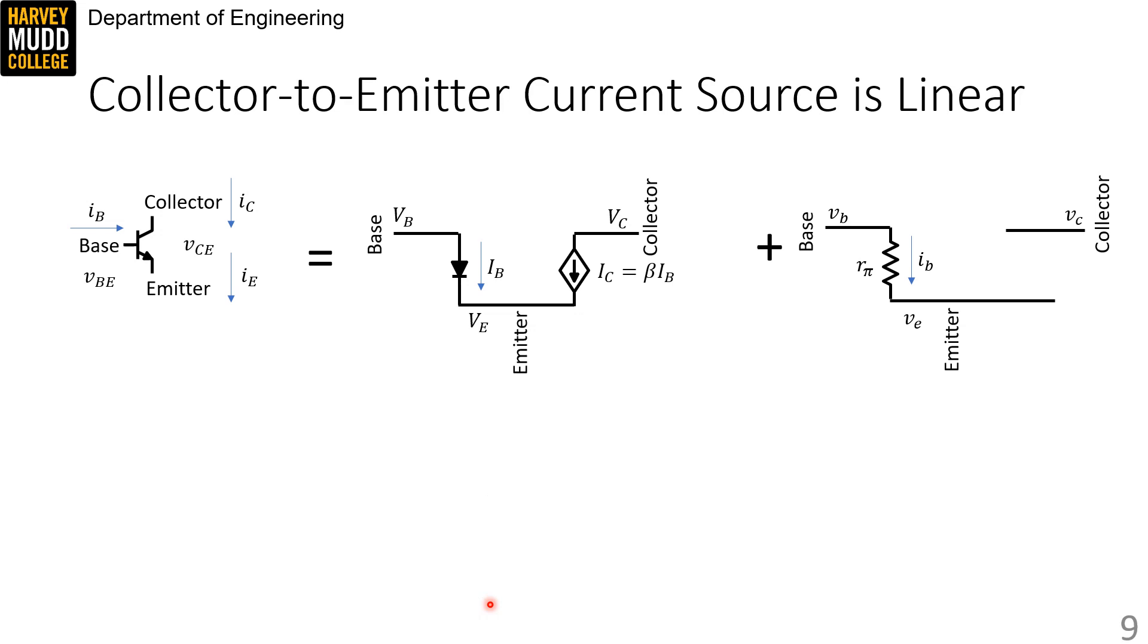Next, we're going to consider the effect of the base emitter voltage on the collector current. And we know that the base emitter junction creates a current between the collector and the emitter in our modified U model, so I've included dependent current source in our model to get started.